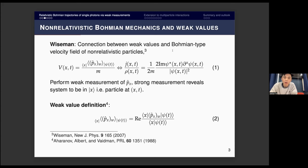Interest in Bohmian mechanics was revived in 2007, when Howard Wiseman drew a connection between weak values and the Bohmian velocity field of non-relativistic particles. He basically constructed a velocity field given some guiding wave psi for these classical particles through this formula, where the nomenclature here denotes a weak value of the particle's momentum.